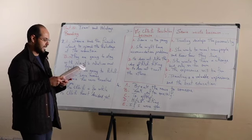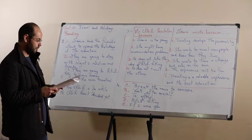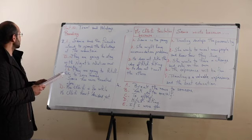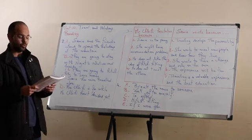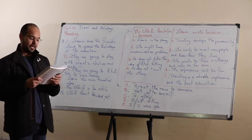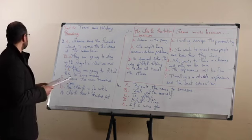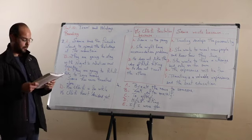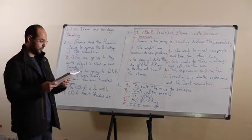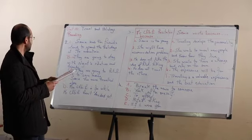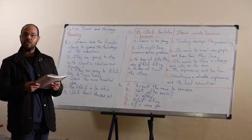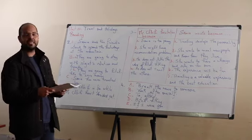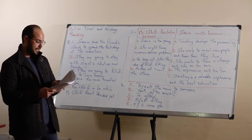Let's move to the comprehension questions. The first question: where do Samya and her friends intend to travel? Samya and her friends intend to spend the holidays in the mountains. They are going to stay with Najat's relatives and friends, and they are going to hitchhike in order to save money. Has Samya ever traveled alone? No, Samya has never traveled alone. Are her parents for or against her traveling alone? Mrs. Shea is for it, while Mr. Shea hasn't decided yet.